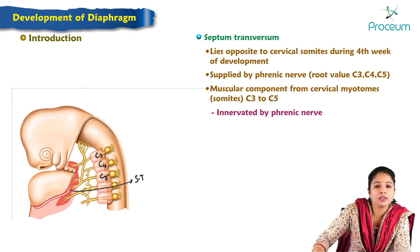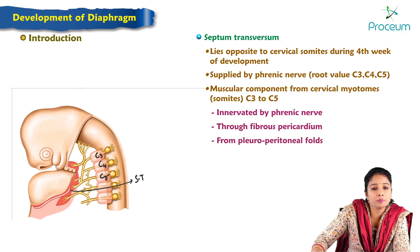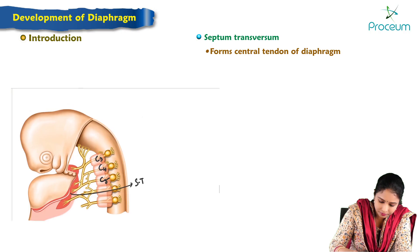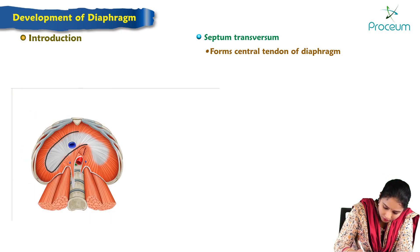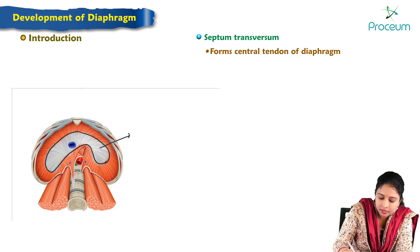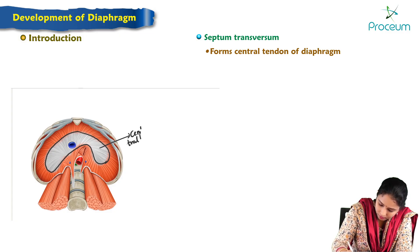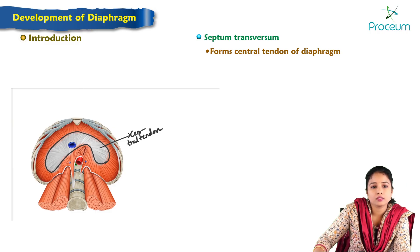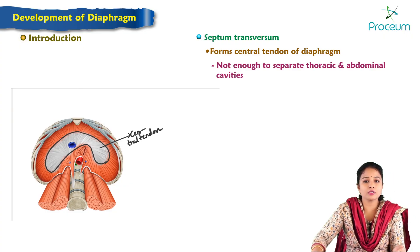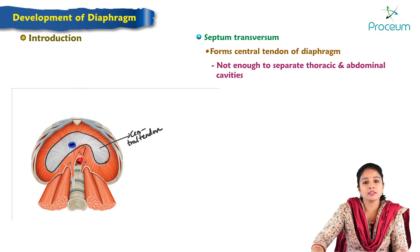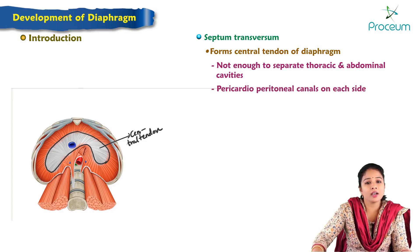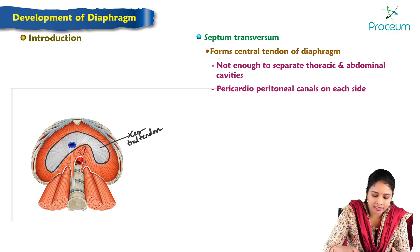This explains that the diaphragm is innervated by the phrenic nerve, which reaches through the fibrous pericardium from pleuroperitoneal folds. Septum transversum forms the central tendon of the diaphragm, shown here in whitish color. This central tendon is derived from septum transversum, but it is not enough on its own to separate the thoracic and abdominal cavities, as there are pericardioperitoneal canals on each side.